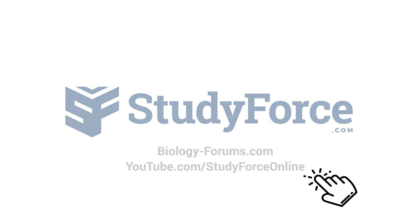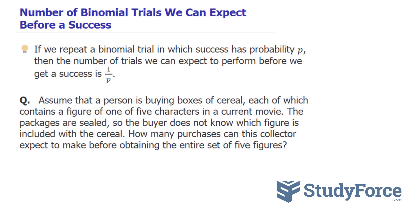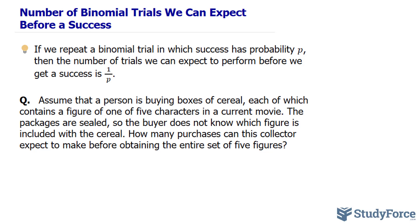In this lesson, I'll teach you how you can determine the number of binomial trials you can expect before a success occurs. If we repeat a binomial trial in which success has a probability of P, then the number of trials we can expect to perform before we get a success is determined by taking 1 divided by P.